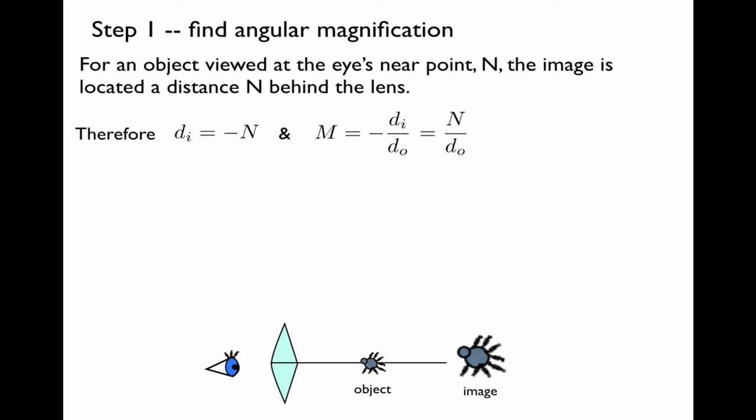So we can solve for do in terms of things that we do know using this relationship, where I've already plugged in negative N as the distance to the image. So we solve for 1 over the distance of the object, which is the quantity that we don't know in the angular magnification.